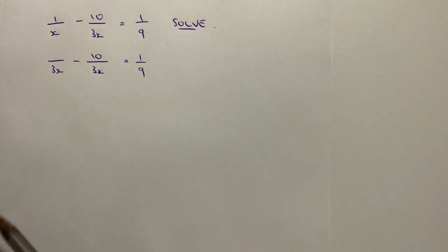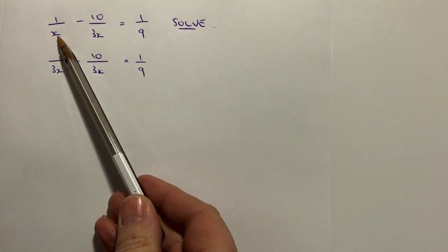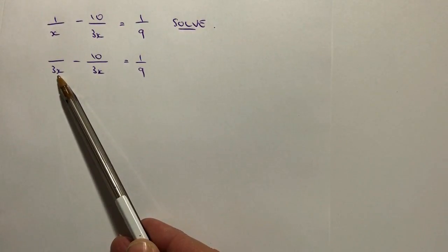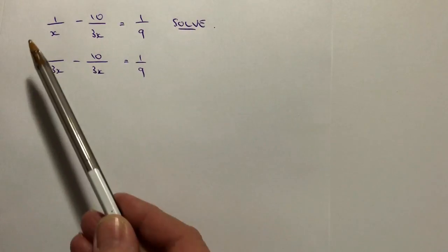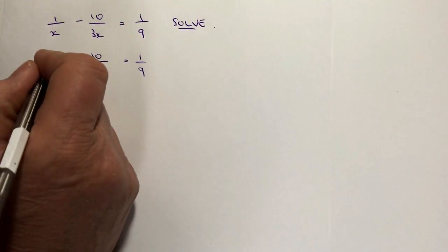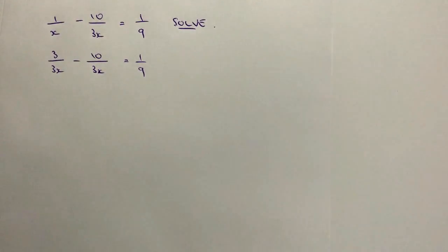So the question is, what have I done to this x to become 3x? In other words, what have I multiplied the x by? Well, I've multiplied it by 3, so I'm going to multiply the top numerator by 3 as well. And that becomes 3 over 3x.